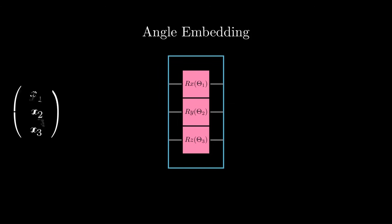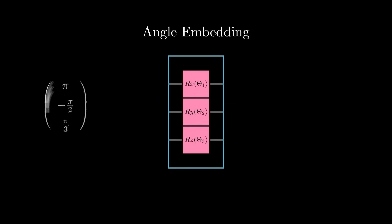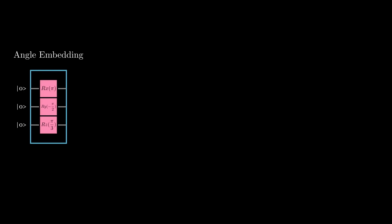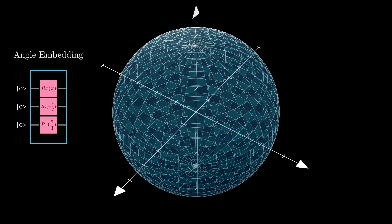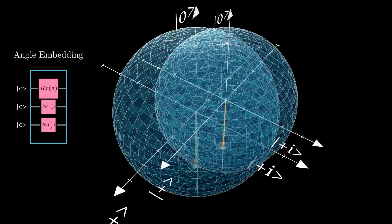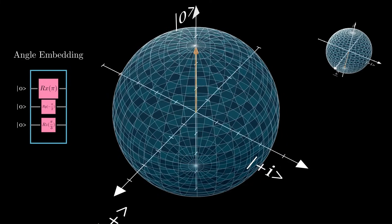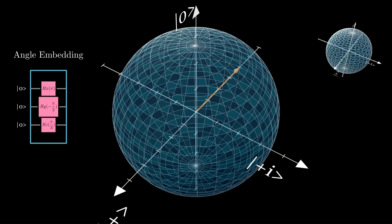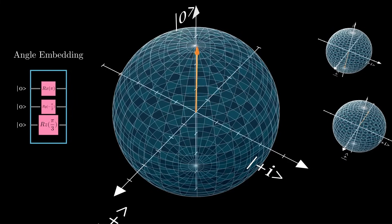Suppose we have an input vector. Let's feed this input vector to our input layer. With the initial state at ket-0, let's pull up a Bloch sphere to visualize the angle embedding. Note how the gate R-X rotates the state vector from ket-0 to ket-1. Let's create its copy and keep it aside and reset our state vector. For the gate R-Y of minus pi by 2, notice the effect and the plane of movement on the state vector. Now it's the turn for R-Z of pi by 3; however, this gate has no effect on the state vector. Can you guess why?